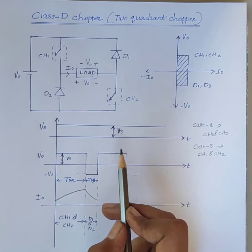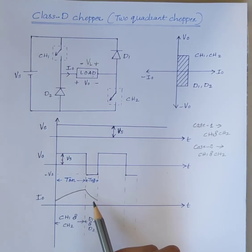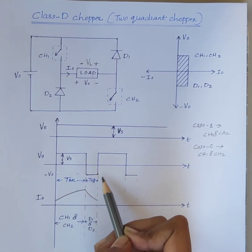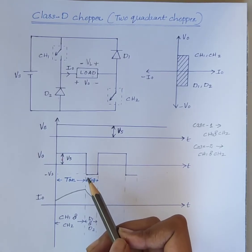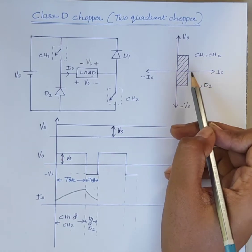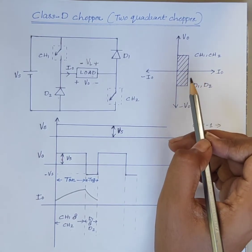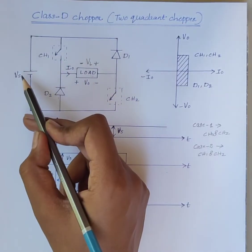We can say that the output current I0 is positive and the output voltage V0 is negative. Hence, the operation of the chopper is in the fourth quadrant and the power flows from load to the source.